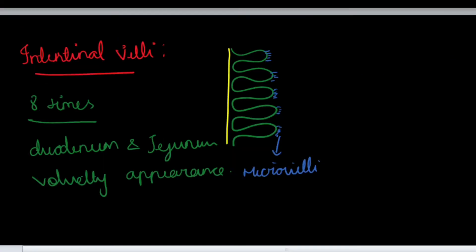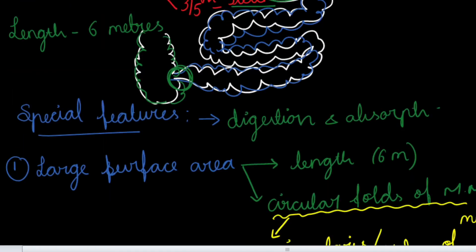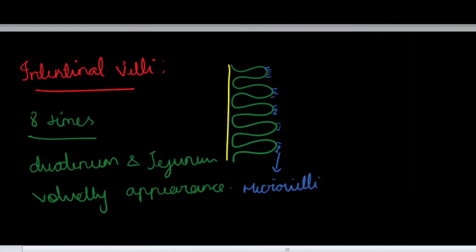In summary, the large surface area of the small intestine is due to its greater length, circular folds of mucous membrane (plicae circulares), and the presence of villi and microvilli. The plicae circulares start from the second part of duodenum and end at the proximal jejunum. The intestinal villi increase the surface area nearly eight times, are seen mainly in duodenum and jejunum, give a velvety appearance, and their tips bear the striated border of microvilli.